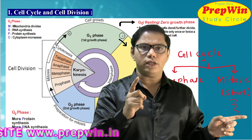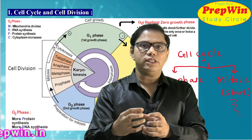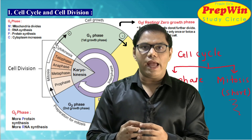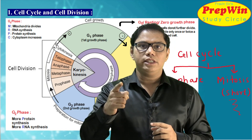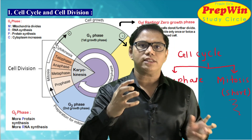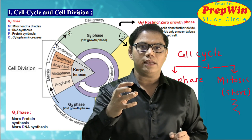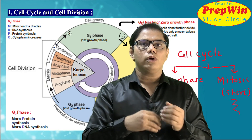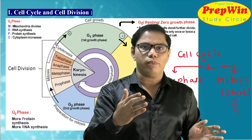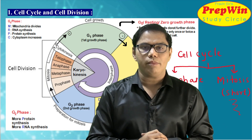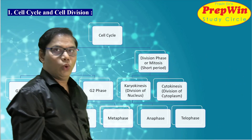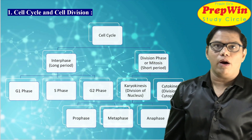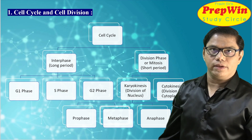Why G1, then S, then G2 — and not G1, G2, G3? Because during S phase, synthesis happens. G1 and G2 phases have many similarities, but S phase has something different that does not happen in G1 or G2. We will see that in detail. Look at this chart — this chart tells us everything about cell cycle and cell division.